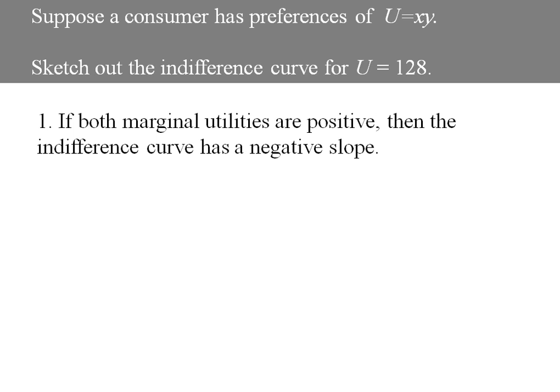So let's find the marginal utility of x and the marginal utility of y. The marginal utility of x is the partial derivative of utility with respect to x, and in this case that yields y. Well, this is going to be positive for any x and y that are positive.